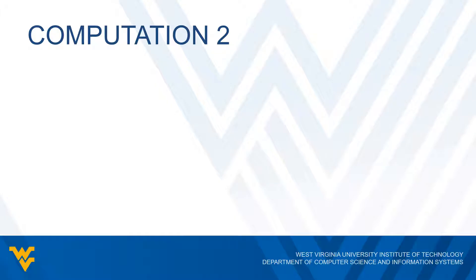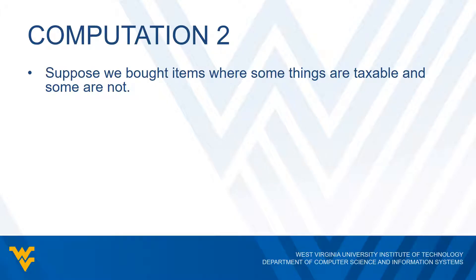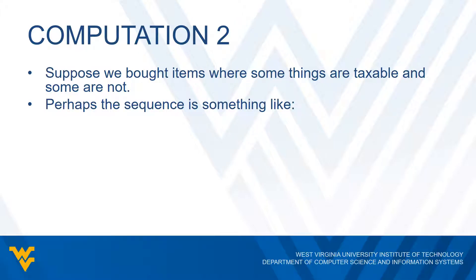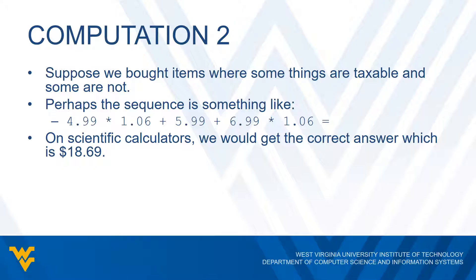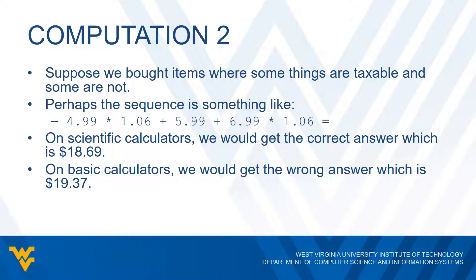Let's take this one step further. Let's say some items we buy are taxable and some are not. So our sequence might now be: $4.99 times 1.06, then add $5.99 (not taxable), then add $6.99 times 1.06, then hit equals. Using a scientific calculator gives us the correct answer of $18.69, because it multiplies 1.06 for the $4.99 and $6.99 items and then adds the $5.99 item.